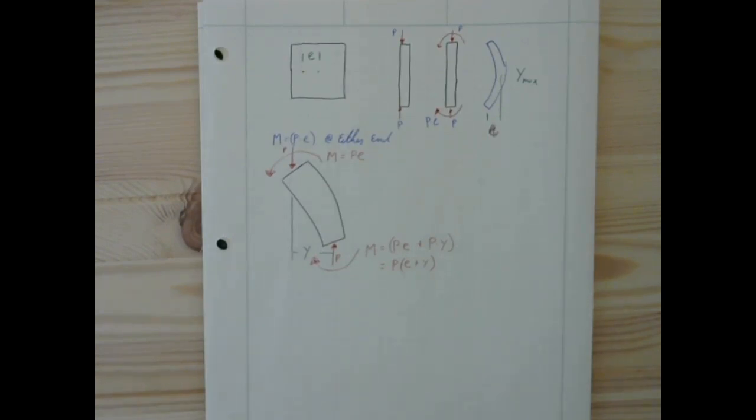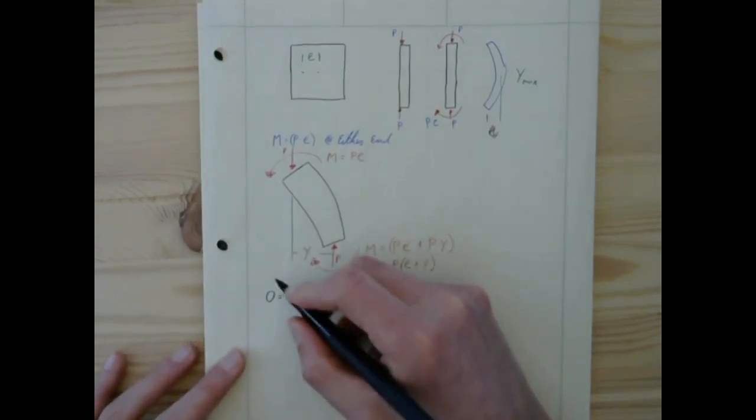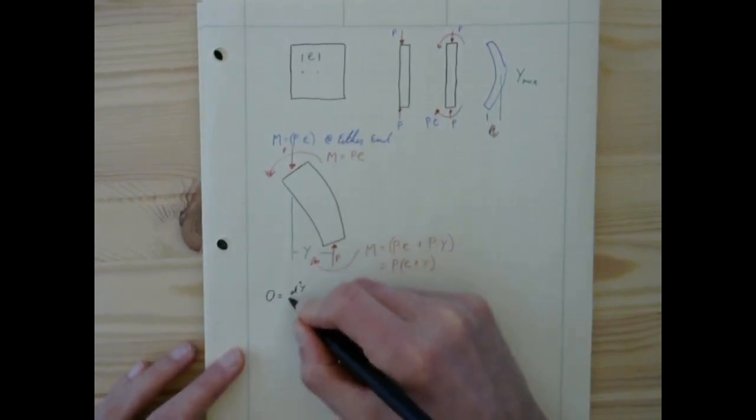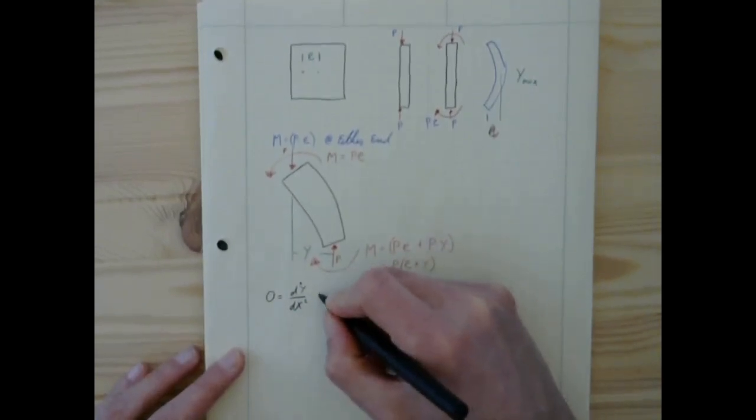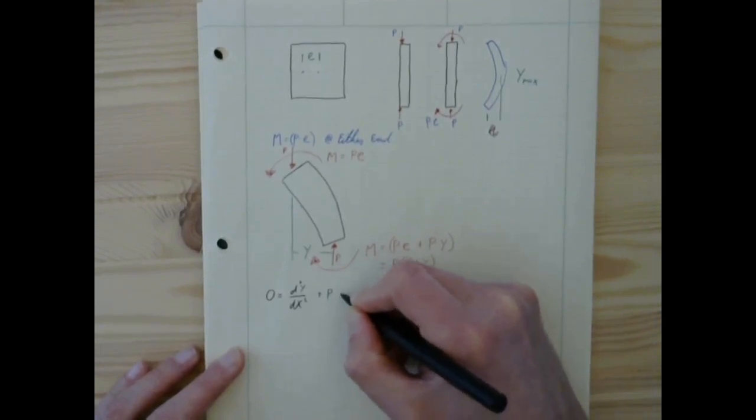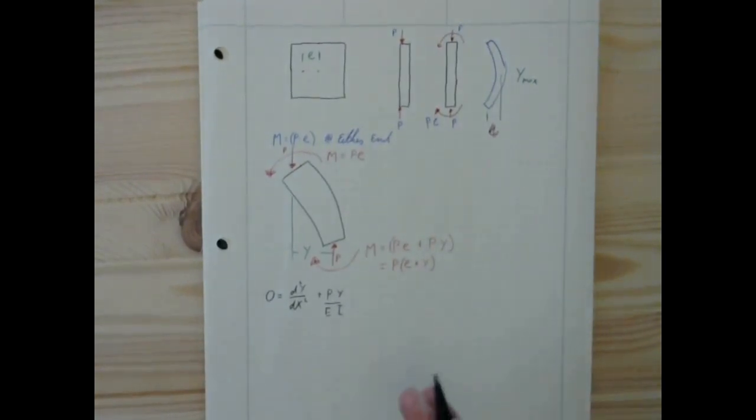So when we look at our differential equation for deflected shapes, we used to have that 0 was equal to the second derivative of the deflection plus P times y, our deflection over EI, or maybe I multiply both sides by EI and there's an EI over there and nothing over there. It's this, right? We've done this before. However, now we don't have this term. This term changes.